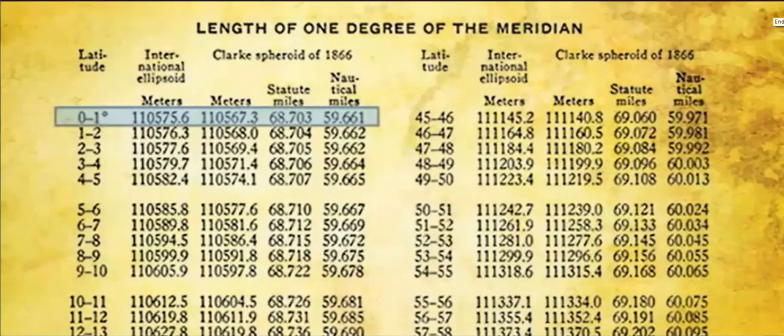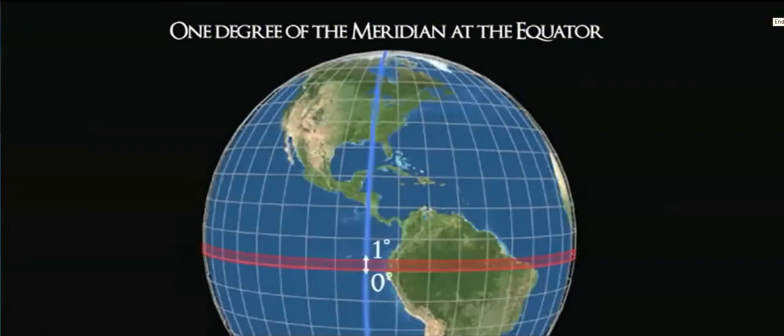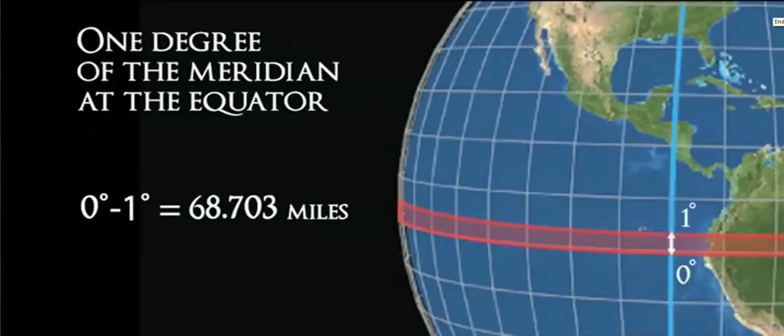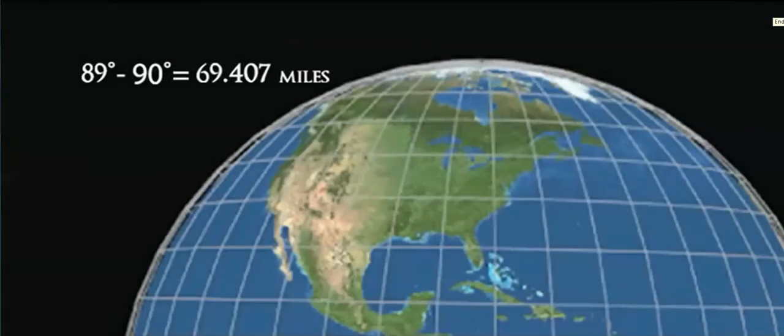You'll notice that at zero, when you travel, leave the equator and go to the first degree north latitude, you've gone 68.703 miles. But if you look down here at the very last one, when you traverse that last degree from 89 and you finally get to the North Pole, you've traveled 69.4 miles. So those degrees have stretched out. This is important to understand how the ancients were able to demonstrate that they understood the size and the shape of the Earth.